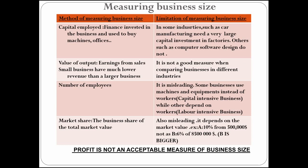The second method is the value of output, which is a common way of comparing business size especially in manufacturing industries — it means the value of sales. However, there is also a limitation here because it depends on the industry. For example, the value of sales in car manufacturing will be higher than in a supermarket or hypermarket. So you cannot rely only on the value of sales to say one business is bigger than another.